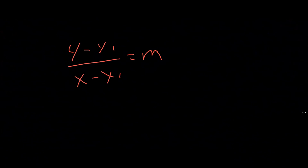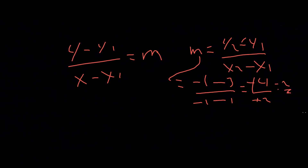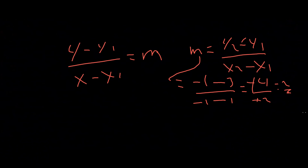We first get the slope: m equals y2 minus y1 over x2 minus x1. So y2 is -1, y1 is 3, giving -1 minus 3 equals -4. And x2 is -1, x1 is 1, giving -1 minus 1 equals -2. So slope m equals -4 over -2 equals 2.